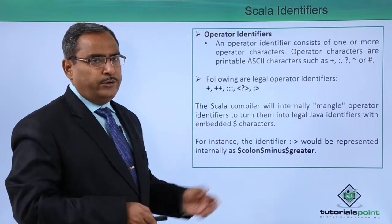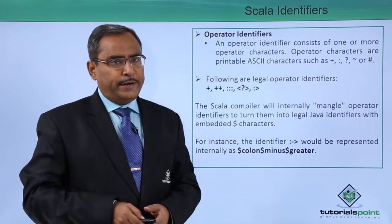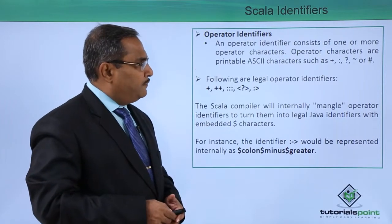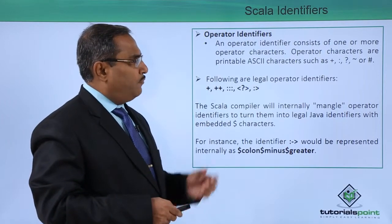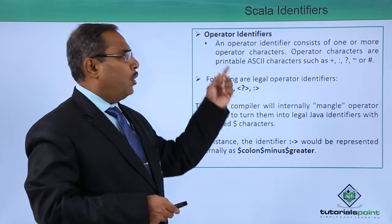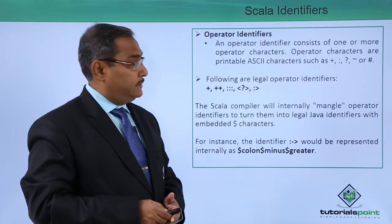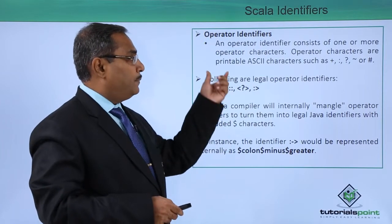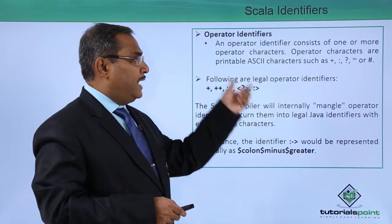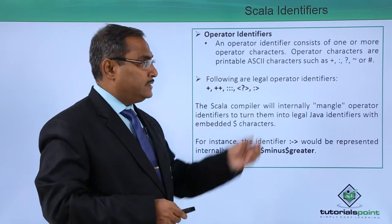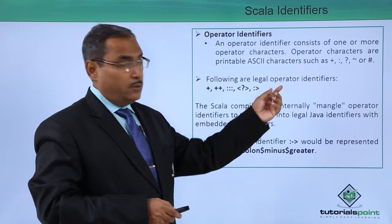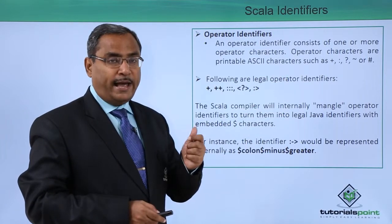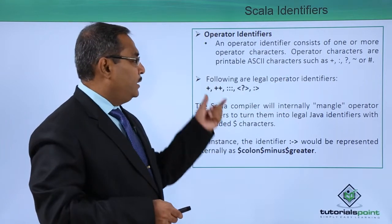The next category is operator identifiers. An operator identifier consists of one or more operator characters. Operator characters are printable ASCII characters such as plus, colon, question mark, tilde, or hash symbol.